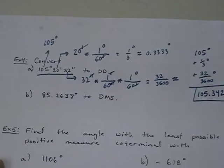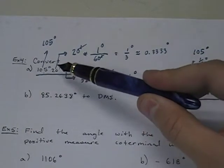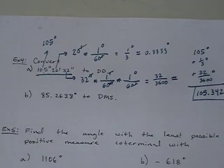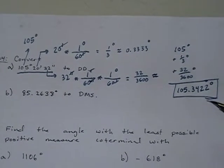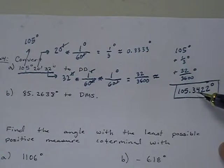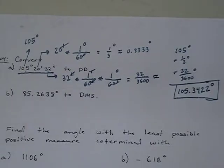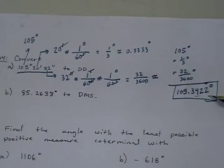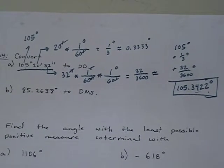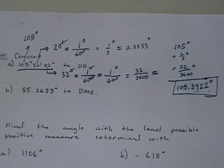I want to point out something. When you go back to the original problem — 105 degrees, 20 minutes, 32 seconds — you're looking at 105 degrees plus a little more. It makes perfect sense that the answer is 105 point something. Use your common sense: if you started with 105 degrees and some change in DMS notation, you need to end with 105 degrees and some change in decimal degrees notation. That's how you convert from DMS to decimal degrees.